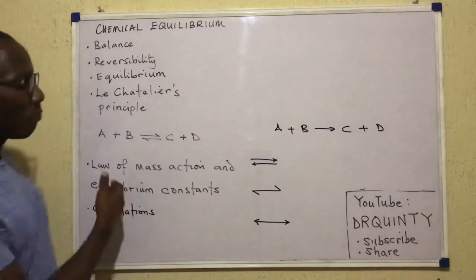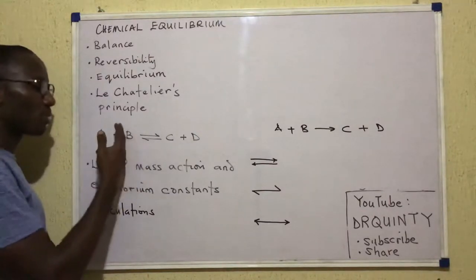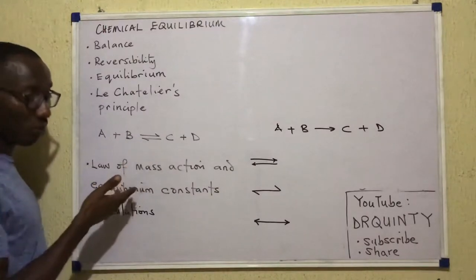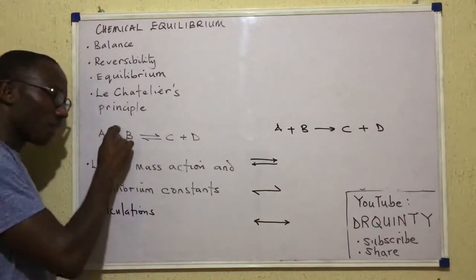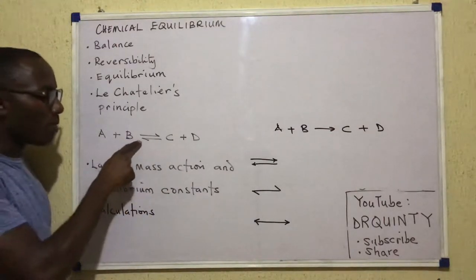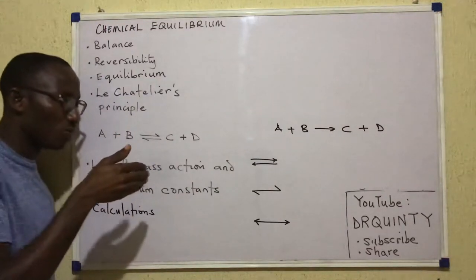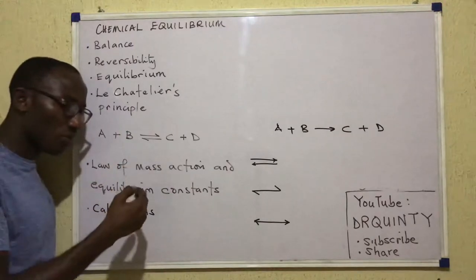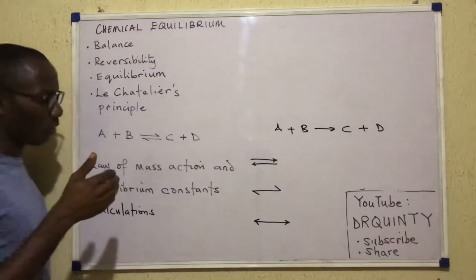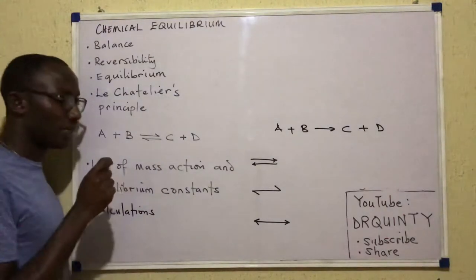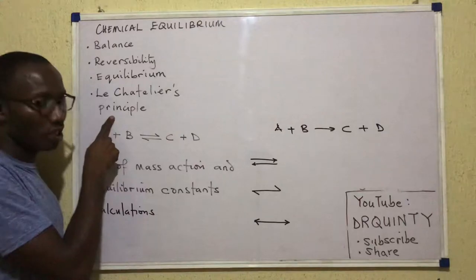Now, if a reaction begins and the forward is faster than the backward, but after some time both of them become equal in rates — equilibrium has been attained. Is it possible for that equilibrium to be lost? Is there anything that can happen that will make the equilibrium go lost? When the equilibrium is lost, we're talking about one of the reactions becoming faster. So, back to the question: can equilibrium be lost after it has been attained? Yes. That is what Henri Le Chatelier tried to explain to us in his famous principle.